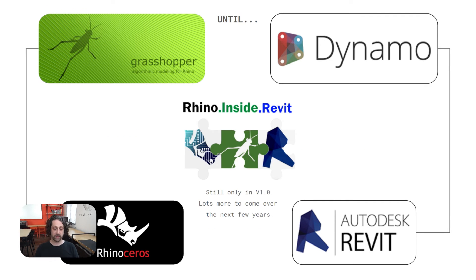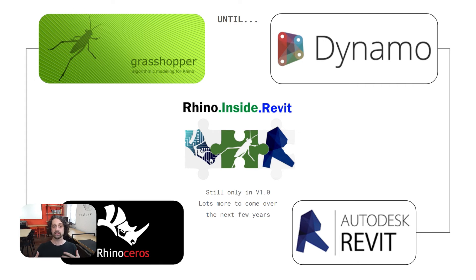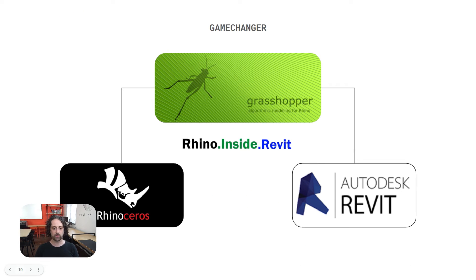The solution to this problem is Rhino Inside Revit — still in version one, but a few years old now. It gives us the ability to use Grasshopper and Rhino within our Revit session. I did a whole other video about this workflow, so check the links below. What this is really doing is allowing Grasshopper to integrate directly into Revit, so we can build and control Revit elements directly from our Grasshopper scripts. This is a game-changer — we get all the complex modeling capabilities of Rhino and all the documentation processes within Revit, all connected through Grasshopper.